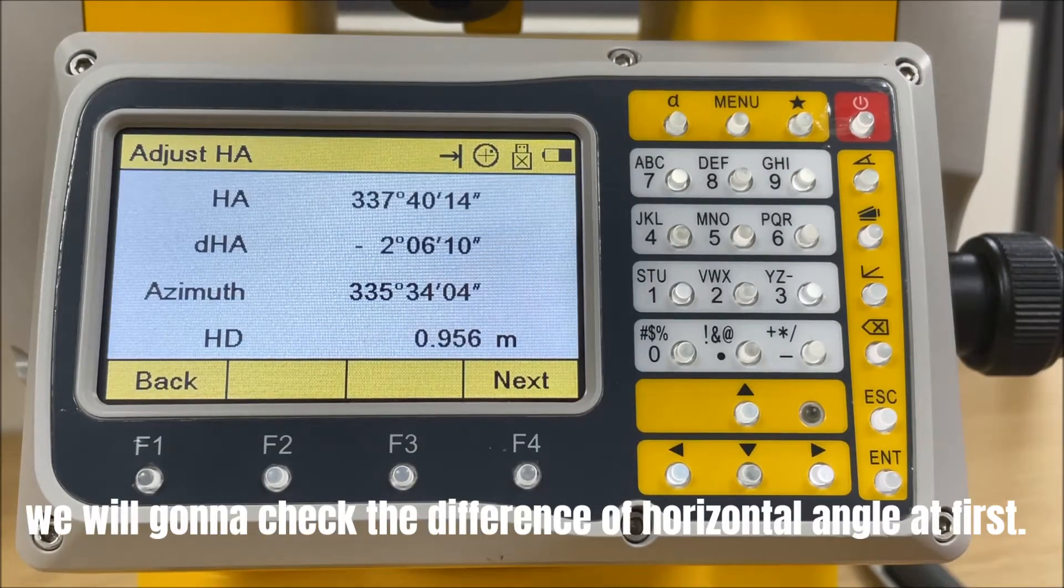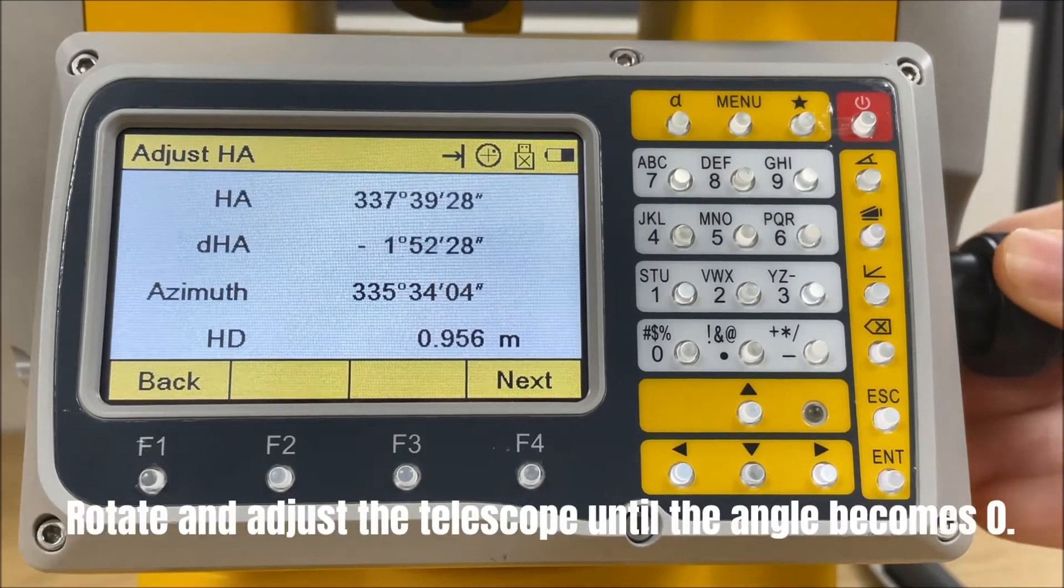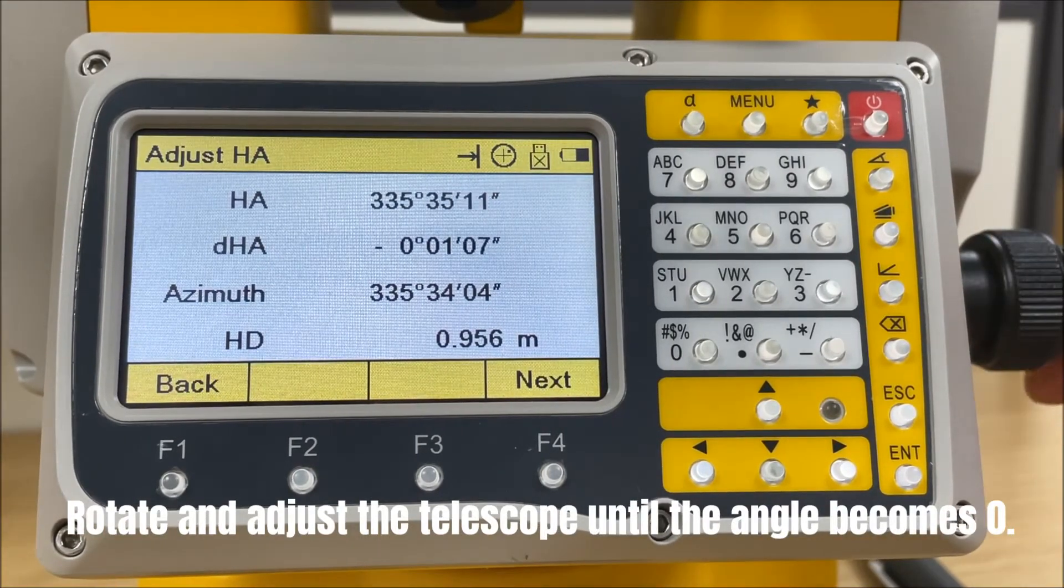We will check the difference of horizontal angle first. Rotate and adjust the telescope until the angle becomes zero.